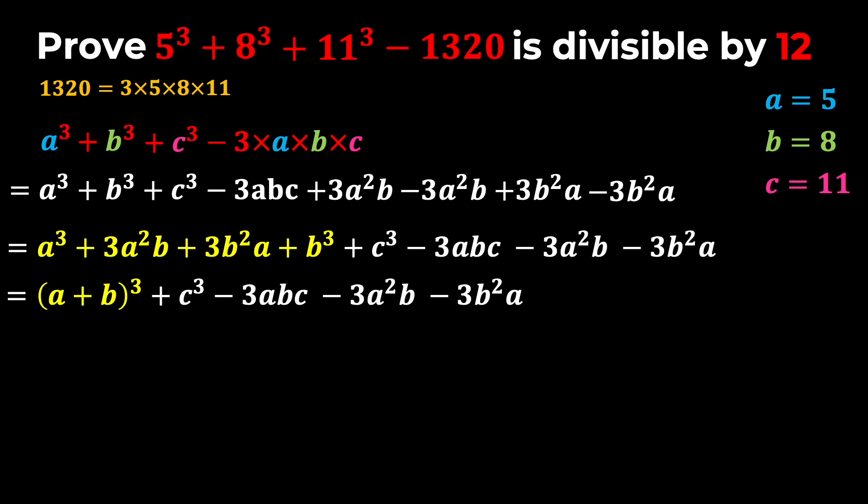Based on the binomial theorem, A plus B quantity cubed is the same thing as this expression here. Now notice that I have A plus B quantity cubed plus C cubed, so basically I have a sum of two cubes. So based on the sum of two cubes identity, I can factor these two out as A plus B plus C times A plus B quantity squared minus A plus B times C plus C squared.